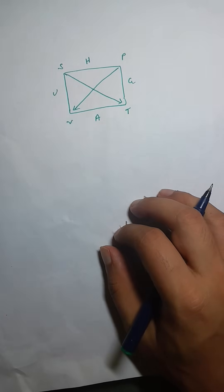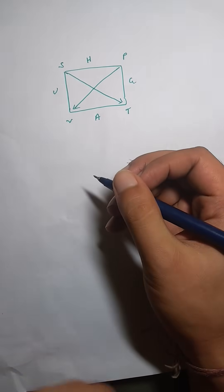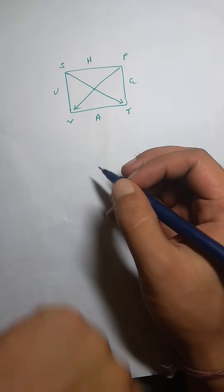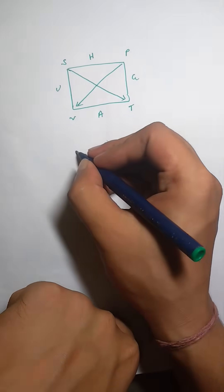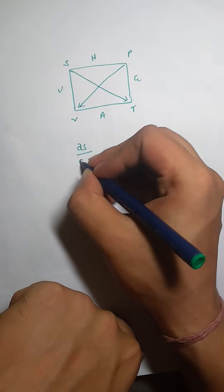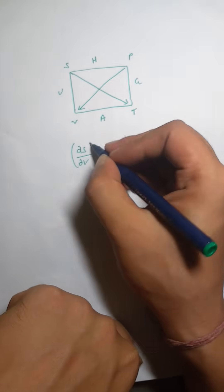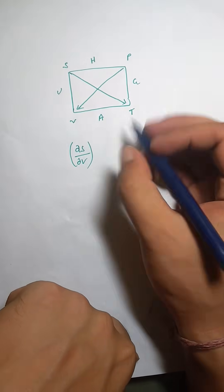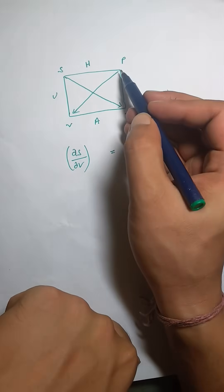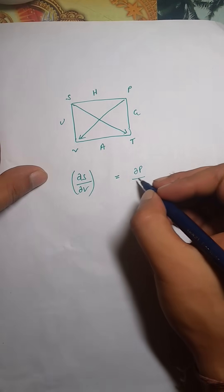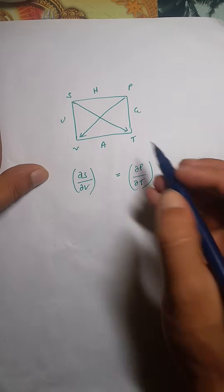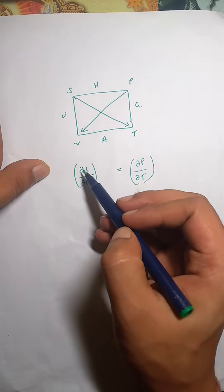Now we'll derive the Maxwell relations. We look at the corner pair S and V, and write (∂S/∂V). The opposite of S and V on the square is P and T, so we write (∂P/∂T).